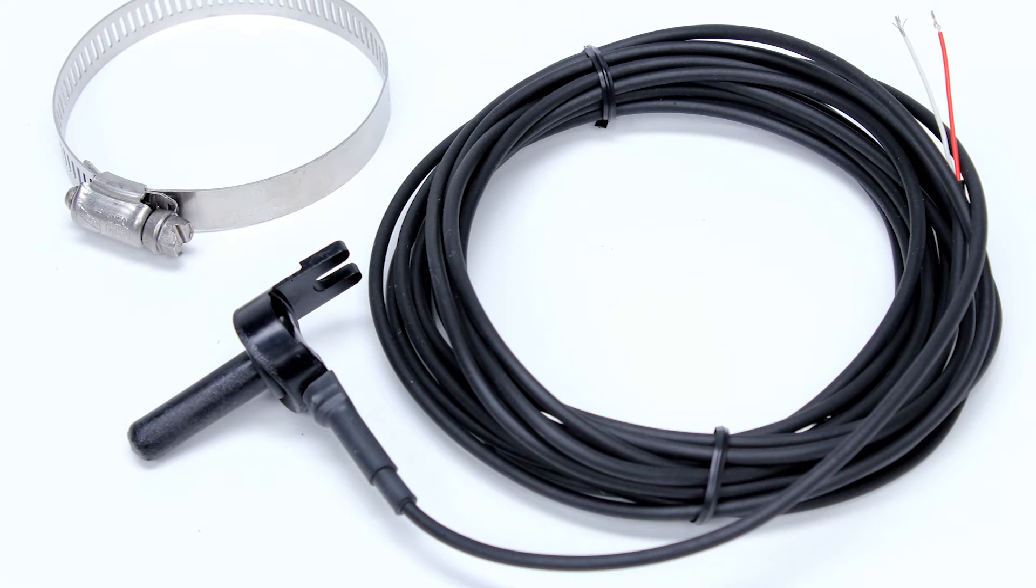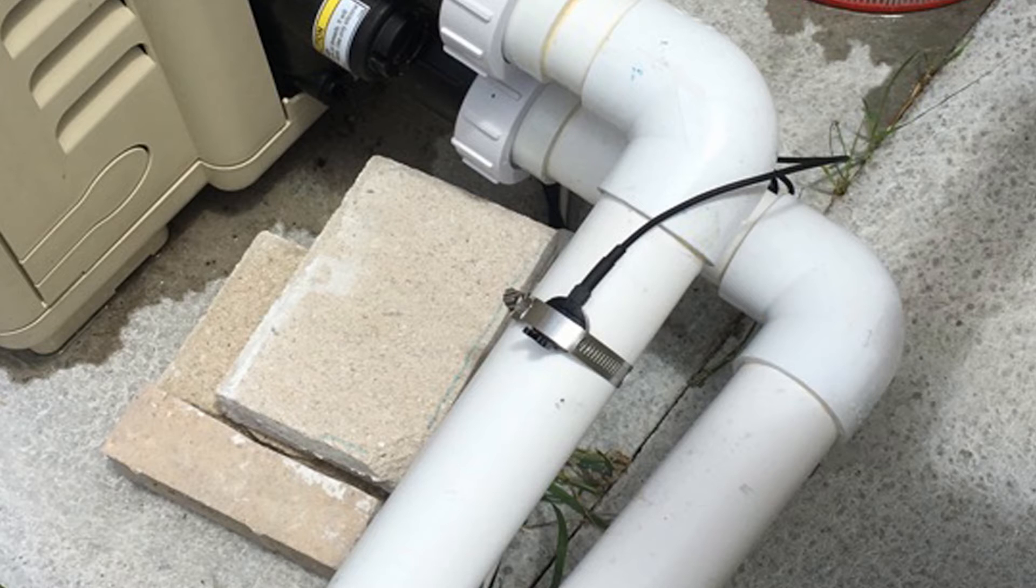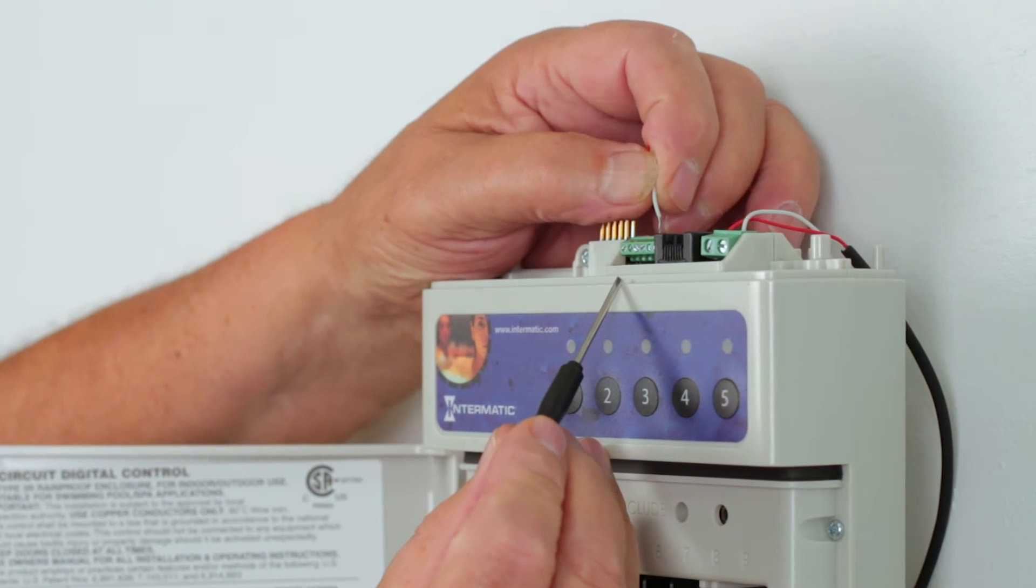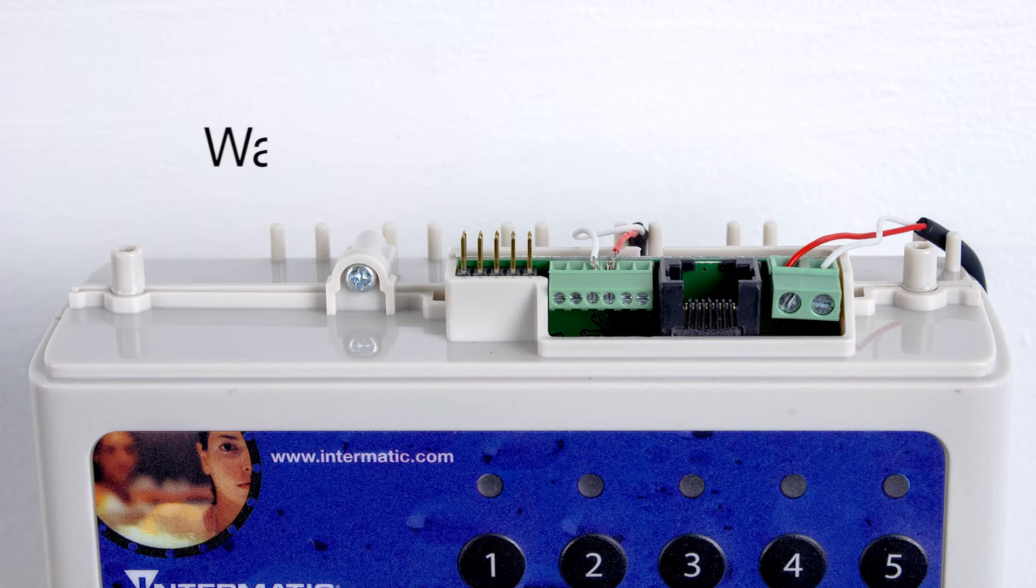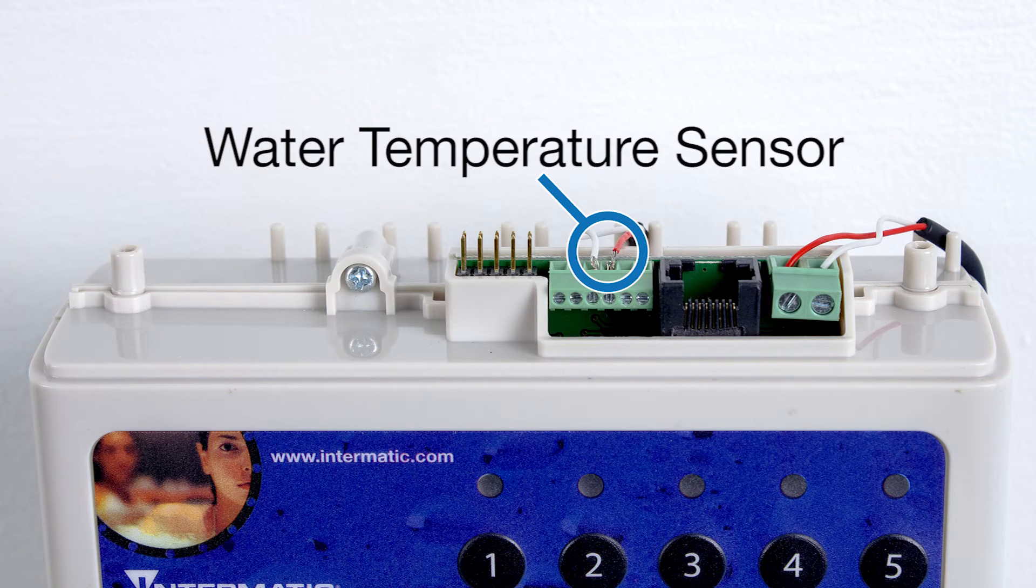Now we can wire the water temperature sensor. Make sure the location for the probe is after the filter, but before the inlet to the heater. Drill a 3 1/8 inch hole and insert the water sensor probe. Secure it with the provided hose clamp. Make sure the probe's O-ring is in place. Run the sensor wires to the receiver and insert both wires to the middle terminals on the six-pin terminal block. These are not polarity sensitive.